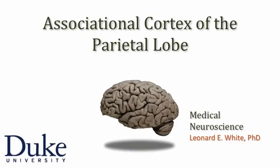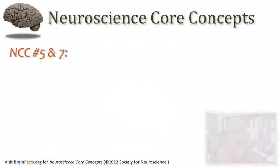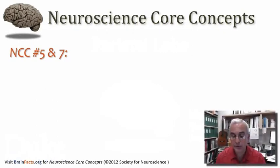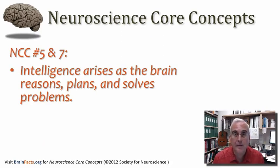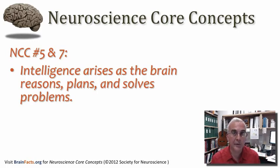Welcome back to Unit 6 of Medical Neuroscience on Complex Brain Functions. In this tutorial, I'd like to talk about the associational cortex found in the parietal lobe of the human brain. Our tutorial relates to two of our core concepts in neuroscience: the associational cortex, and how it is from the integrated action of these networks that intelligence arises as the brain reasons, plans, and solves problems.